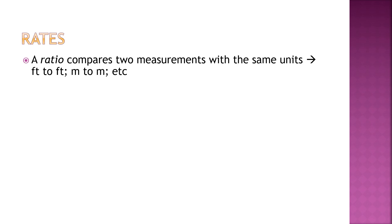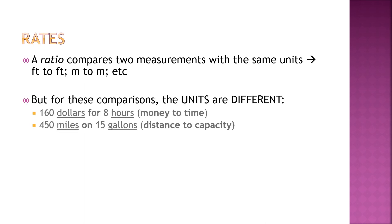Rates is a ratio that compares two measurements with different units. With ratio, we compare same units — if they're not the same, you make them the same to compare. For rates, it is different: the units are different. Ratio compares same units; rates involves two different units.